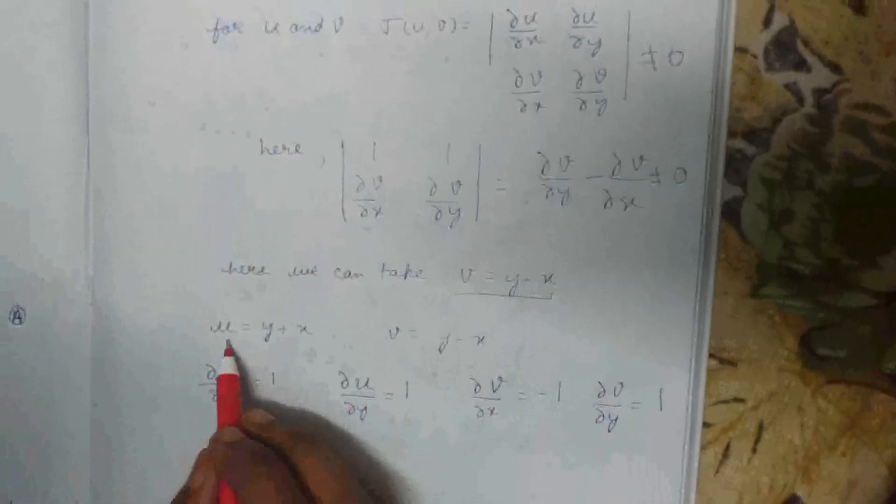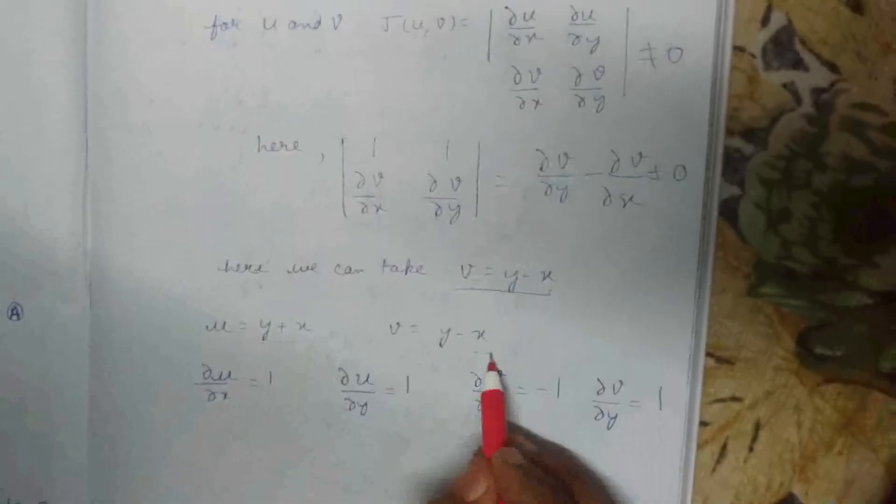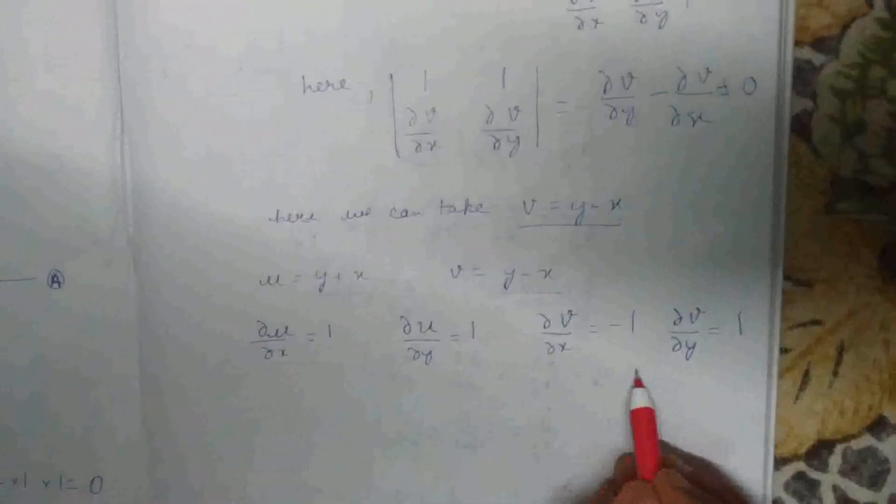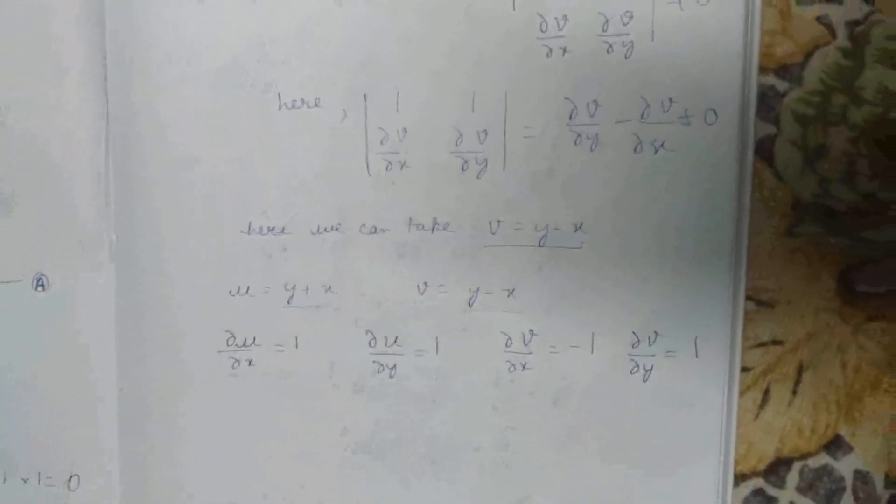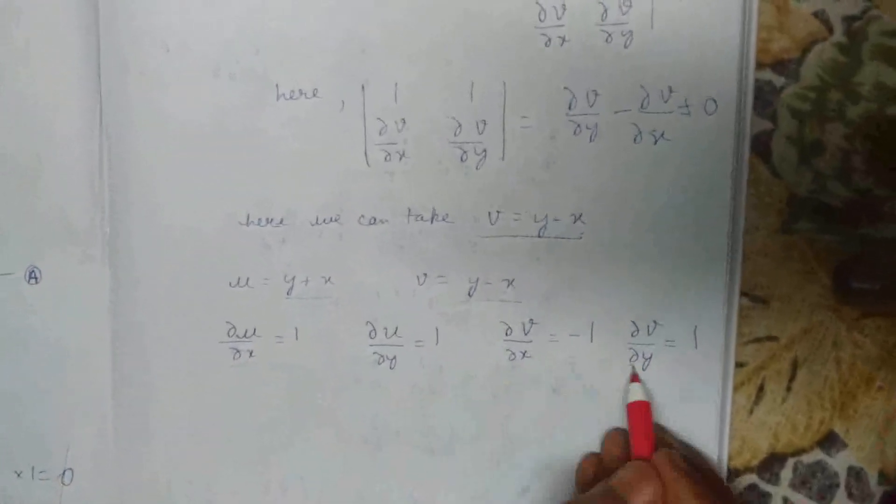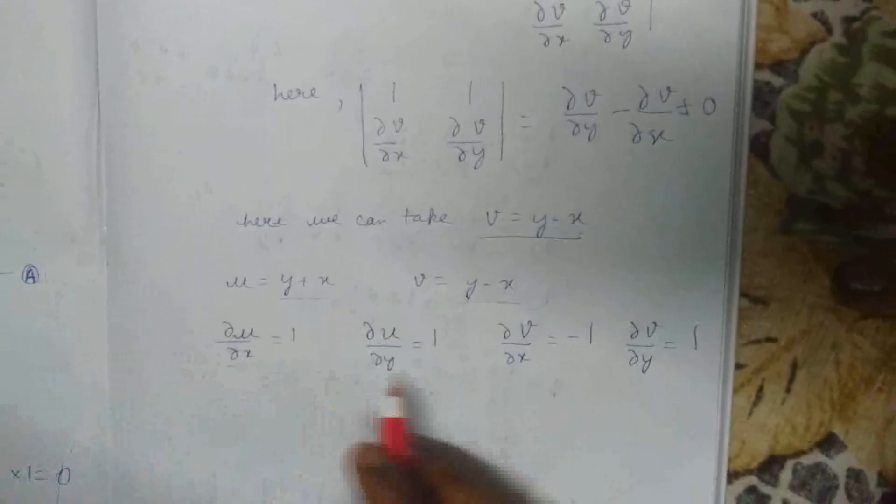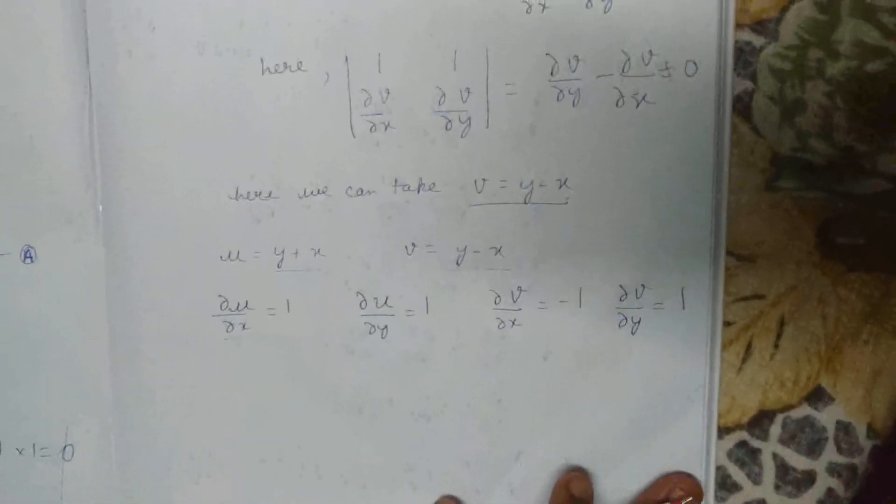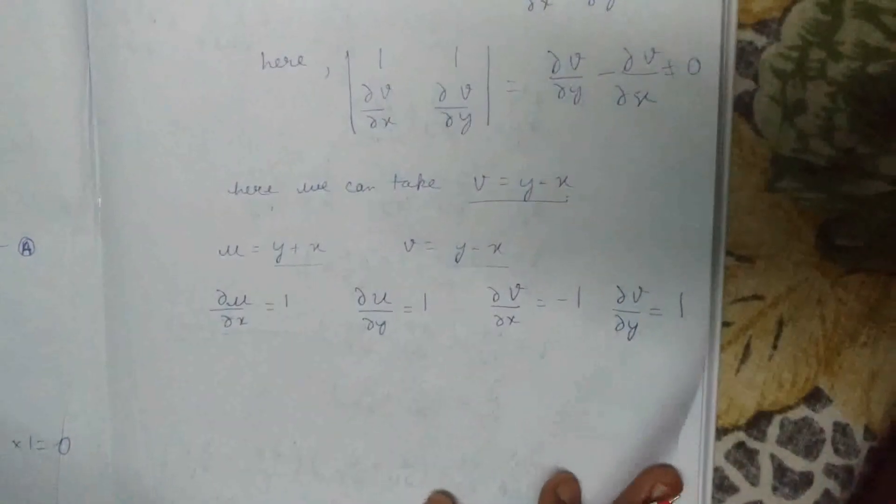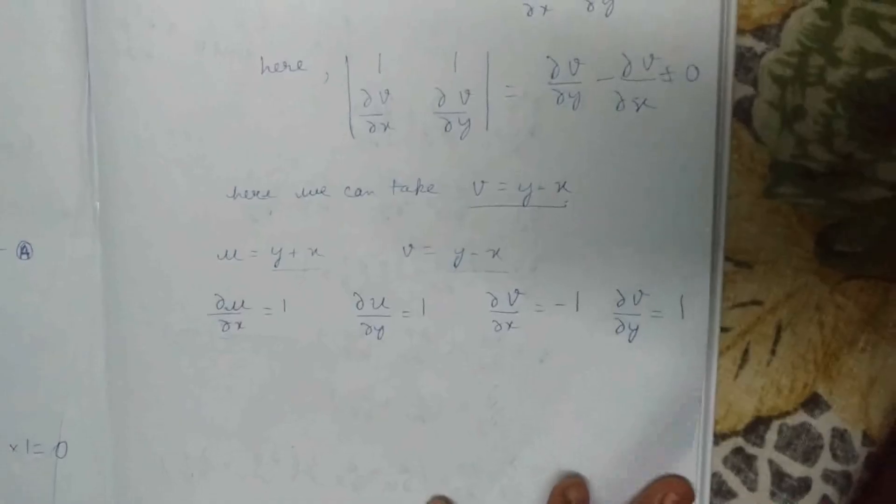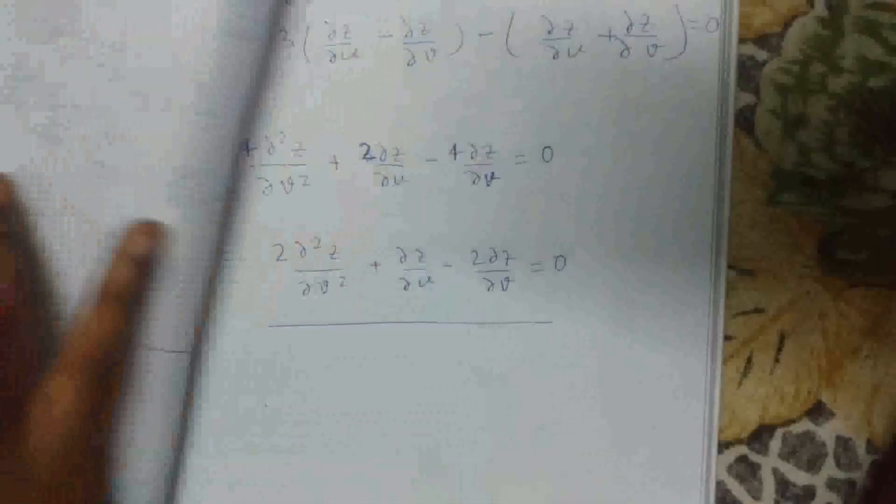We get two values, U and V: Y plus X and Y minus X. We find their differentials this way: Uₓ, Uᵧ, Vₓ, Vᵧ respectively, and we get all the values. Now we're going to use the transformation of U and V in the general form.